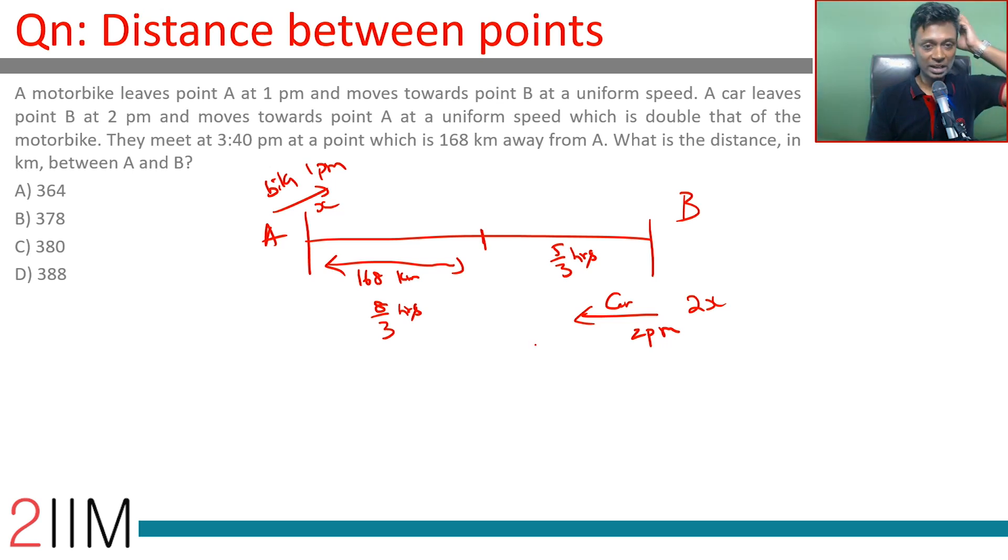A has traveled for 8/3 hours at a speed of x. B travels for 5/3 hours at a speed of 2x. So 8/3 times x is 168. What is 5/3 times 2x? This is what we're being asked. 8/3 x and 10/3 x - this is in the ratio 8 to 10.